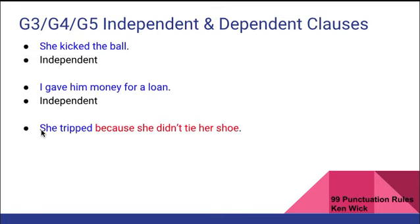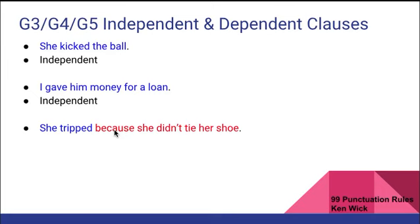Here we have two clauses: 'she tripped' and 'because she didn't tie her shoe.' The first clause has a subject and verb and does not begin with a subordinating conjunction, therefore it is independent. The second clause has a subject and verb and does begin with a subordinating conjunction, therefore it is a dependent clause.